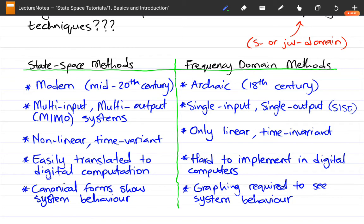So the first one is that State Space methods are more modern, being found in the 1900s, as opposed to the more archaic frequency domain methods, which are over two centuries old. And State Space Methods can be used for multi-input and multi-output systems.